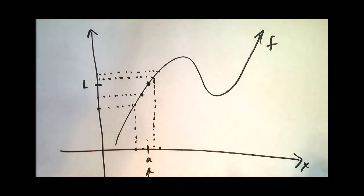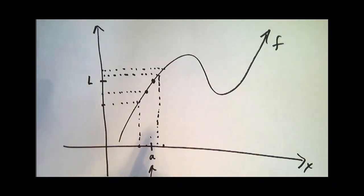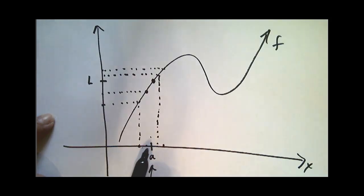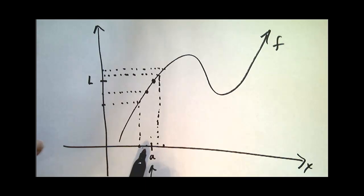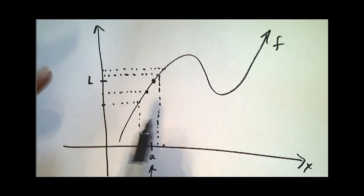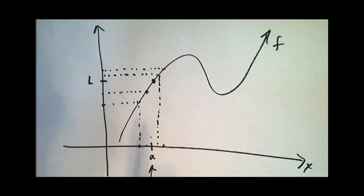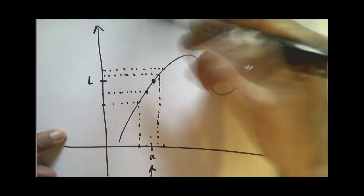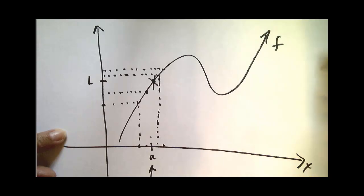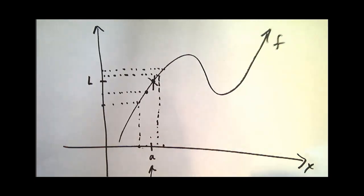This picture may be misleading because you might think that as my x values get closer to a, my y values get closer to f of a — the value of the function at a. In this case that would be true, but it's not always true. What actually happens at a is often of little interest to us when evaluating a limit.